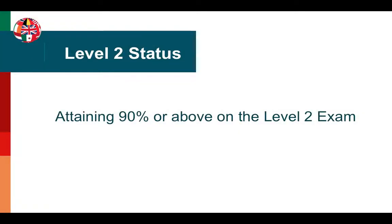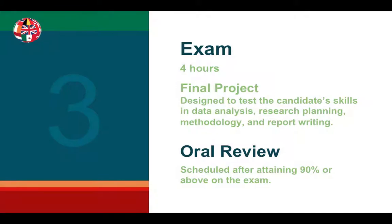Level 2 status is achieved by attaining a score of 90 or above on the Level 2 exam. Level 3 is an exam that is four hours long, and it's basically a final project designed to test the candidate's skills in data analysis, research planning, methodology, and report writing. Level 3 concludes with an oral review, which is scheduled after attaining a score of 90 or above on the exam.